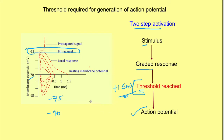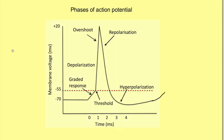Now let's look at the phases of the action potential. Once threshold is reached, there is an abrupt change in potential — the slope changes and it becomes almost a straight line. This abrupt change in potential towards positive from the threshold is known as the depolarization phase of the action potential. When the depolarization phase crosses zero millivolts, the membrane inside has become positive with respect to outside — this part is known as overshoot.